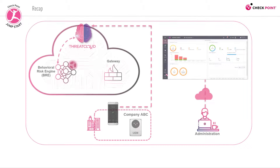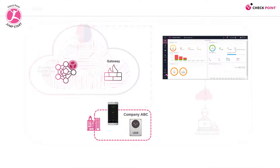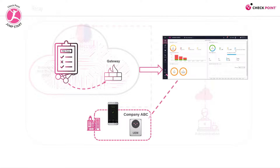As previously discussed, Harmony Mobile integrates with a UEM to provide risk posture assessment of devices in the organization. Based on the assessment and on predetermined criteria, the UEM can then quarantine a risky device or activate a set of policies or mitigation actions until the risk is removed. For the sake of simplicity, we'll be using Microsoft Intune as an example throughout this lesson.